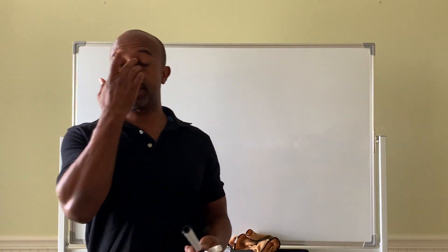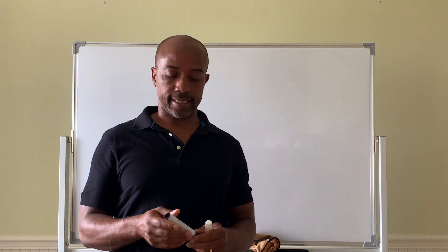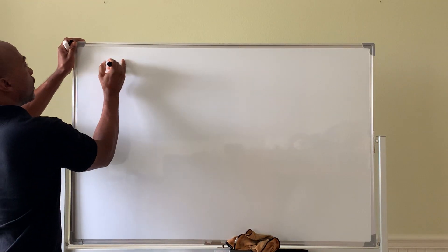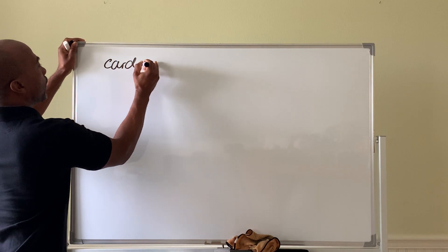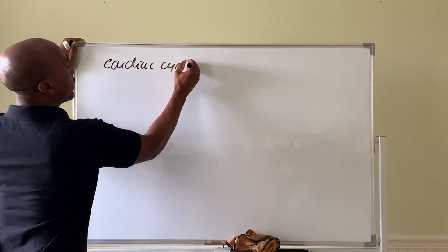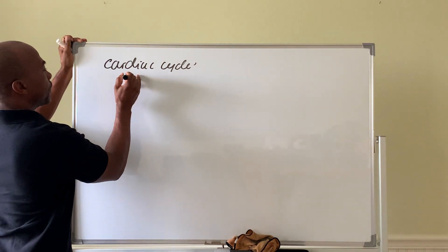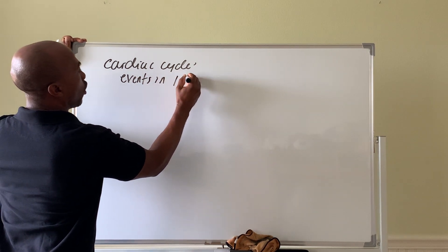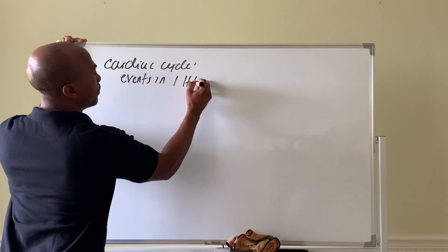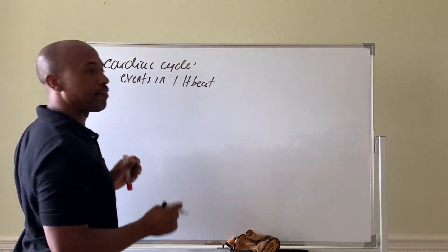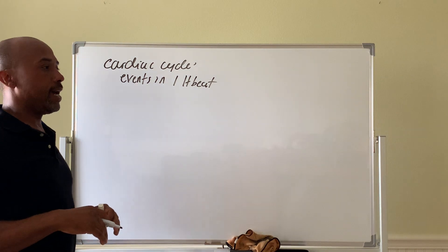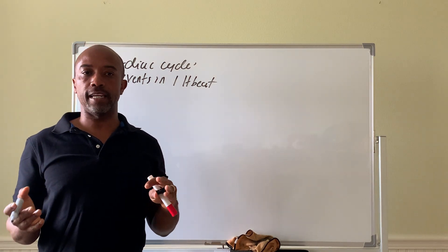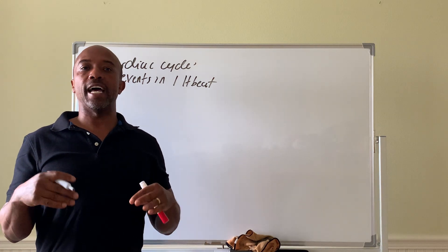Today we will talk about the cardiac cycle. The cardiac cycle refers to events that happen in one heartbeat. There are five events that happen. We're going to go through those and have you be aware of what the atria and ventricles are doing and how that is flowing.